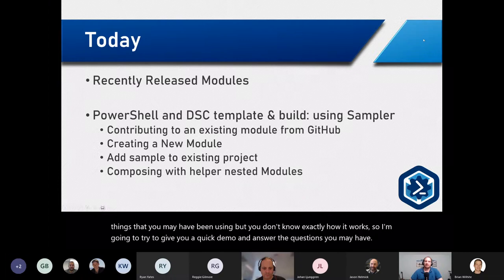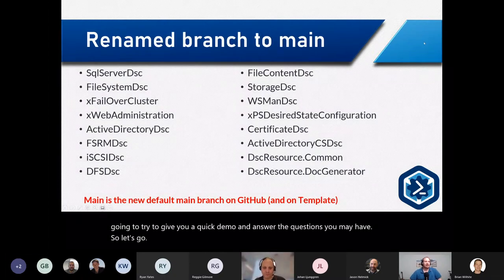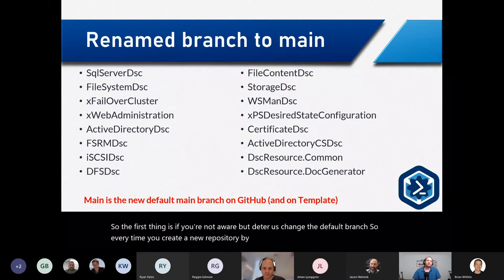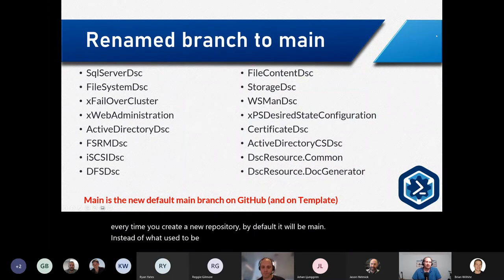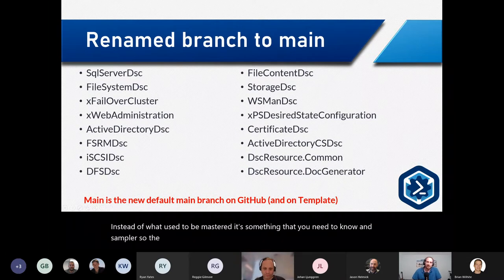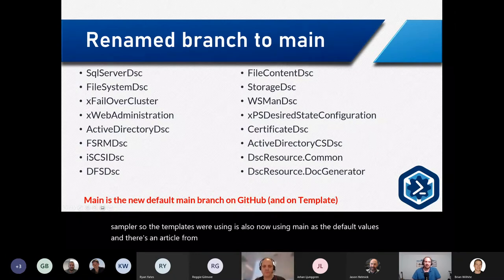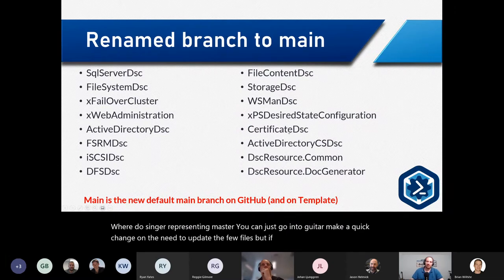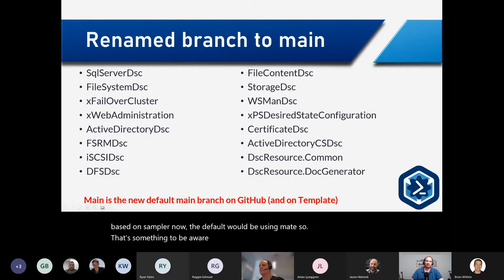The first thing to know is that GitHub has changed the default branch. Every time you create a new repository, by default it will be 'main' instead of what used to be 'master'. The templates we're using now also use 'main' as the default value. There's an article from Dan explaining how to change it if you were using 'master'. If you create a new DSC repository based on Sampler from today, it will default to 'main'.